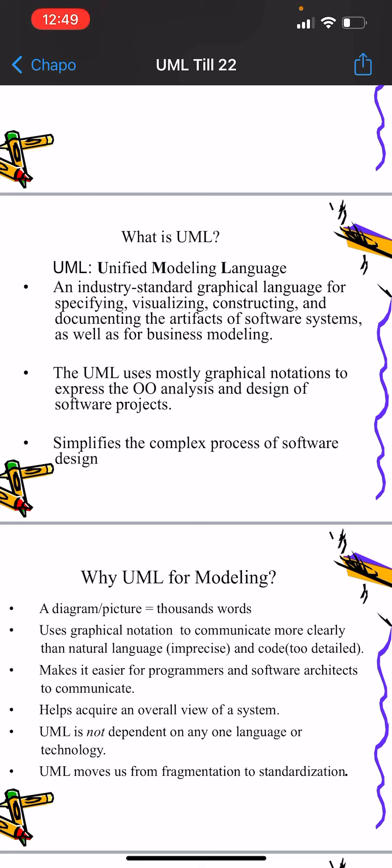It's an industry standard graphical language used for modeling in industry-level projects. UML is used for specifying components and dependencies of a system, visualizing software components with the help of diagrams for understanding and clarifying, and documenting the artifacts of software systems including inputs, outputs, and data flow of each component.